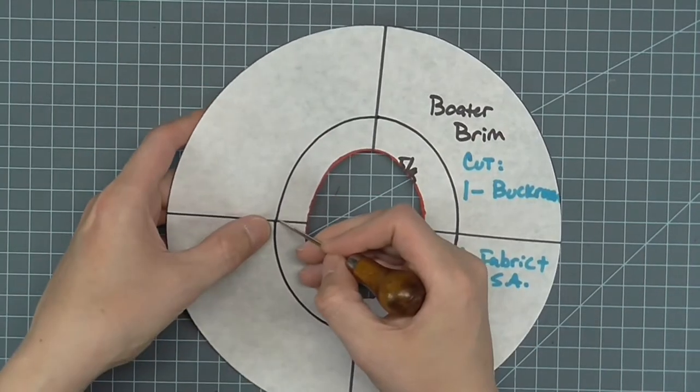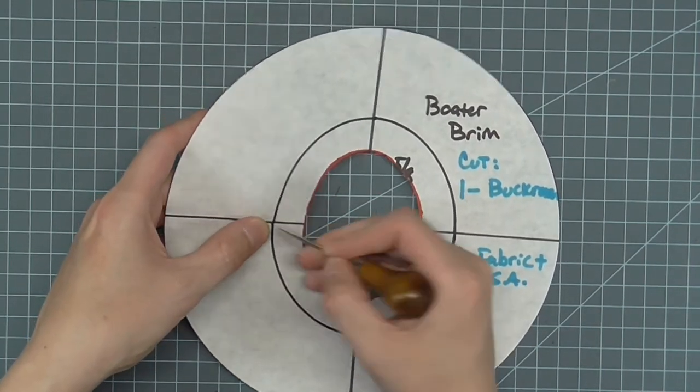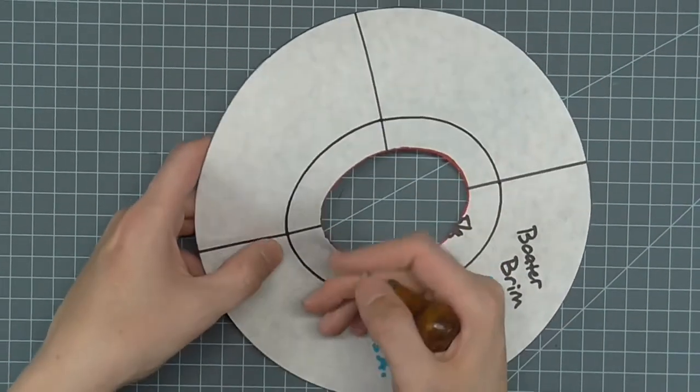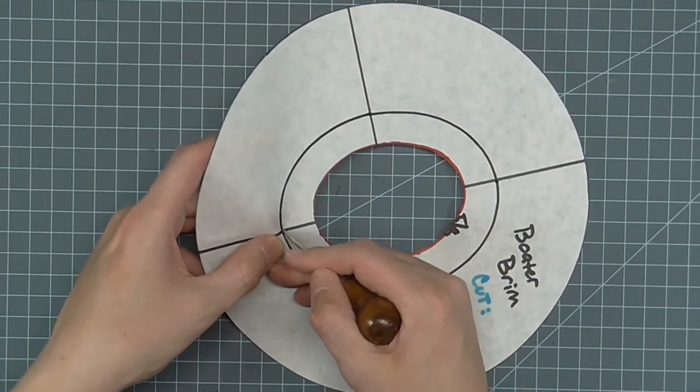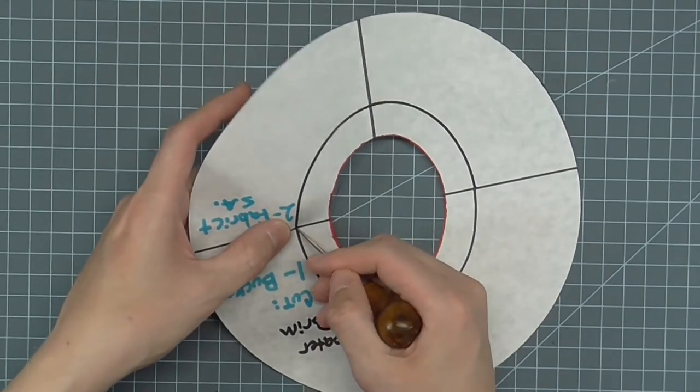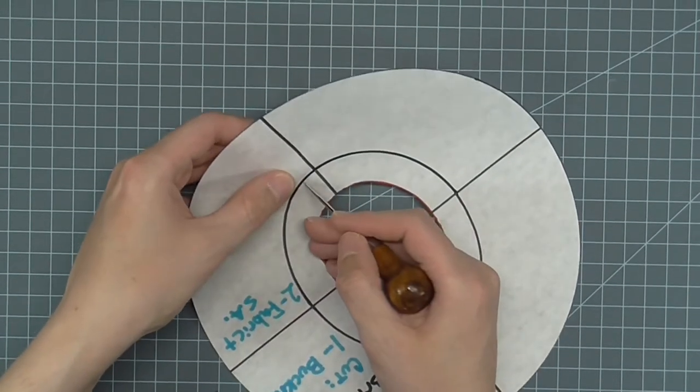One method of marking the head size line on the brim is to punch holes in the drawn line. The hole should be about every half inch. Be sure to mark the axis line holes as they meet the head size line.